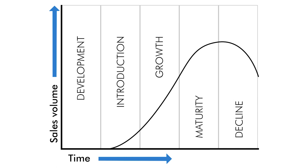In the maturity phase, the offering is now well known. Demand tends to stabilize and sales slow down. The industry is characterized by thick competition, which pushes companies to decrease prices to maintain leadership. The market saturates and the company must activate differentiating strategies to acquire new consumers — it can expand the market, change or improve quality, features, or style (called product modification), and edit non-product-related elements such as communication, price, and distribution. As soon as the offering becomes obsolete, sales and revenues drop until it's no longer convenient to continue, and this is the decline phase.